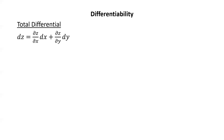Total differential. The total differential dz is defined as the partial of z with respect to x times dx plus the partial of z with respect to y times dy. Here are two different notations for expressing the same thing.